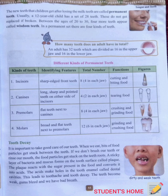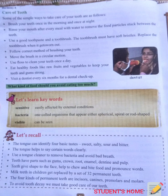Tooth decay means getting rotting of teeth. It is important to take good care of our teeth. When we eat, bits of food particles get stuck between the teeth. If we don't brush our teeth or rinse our mouth, the food particles get stuck on the teeth. A sticky layer of bacteria and mucus forms on the tooth surface called plaque. The plaque reacts with the sugar present in the food and converts it into acids. The acids make holes in the tooth enamel called dental cavities, leading to toothache and tooth decay. The teeth become weak, gums bleed, and we have bad breath.